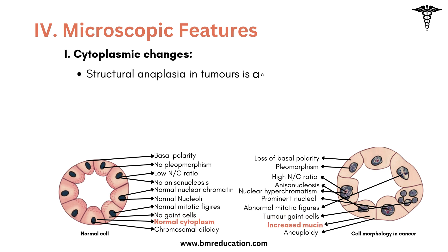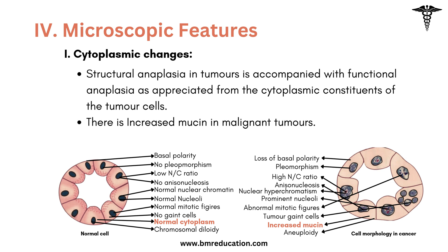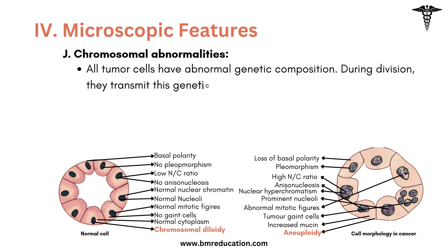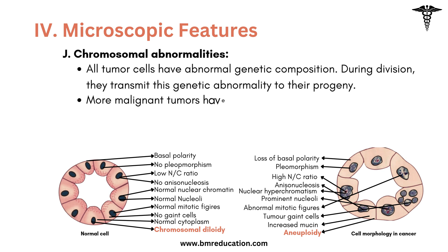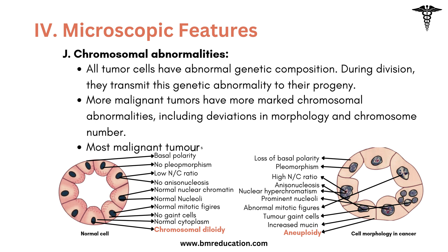The next feature is cytoplasmic changes. Structural anaplasia in tumors is accompanied by functional anaplasia, as appreciated from the cytoplasmic constituents of the tumor cells, and there is increased mucin in malignant tumors. The last feature is chromosomal abnormalities. All tumor cells have abnormal genetic composition, and during division they transmit this genetic abnormality to their progeny. More malignant tumors have more marked chromosomal abnormalities, including deviations in morphology and chromosome number, so most malignant tumors show DNA aneuploidy.